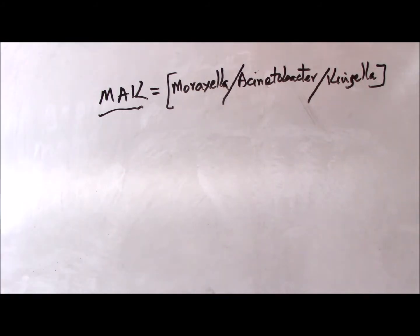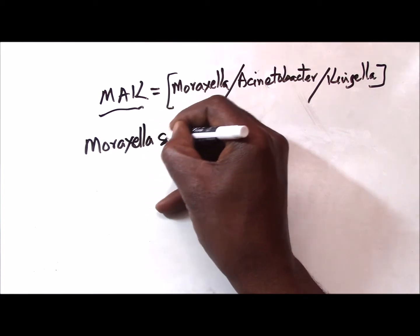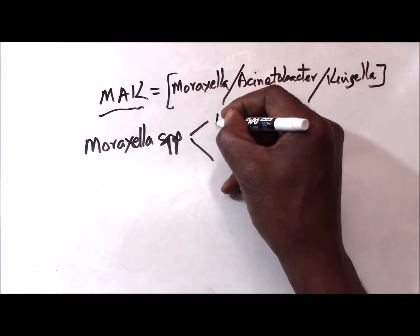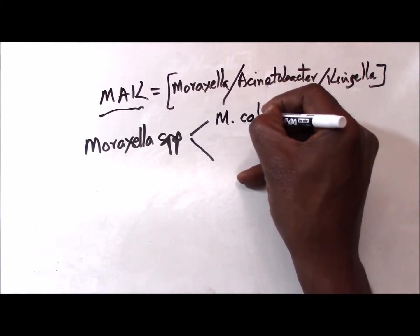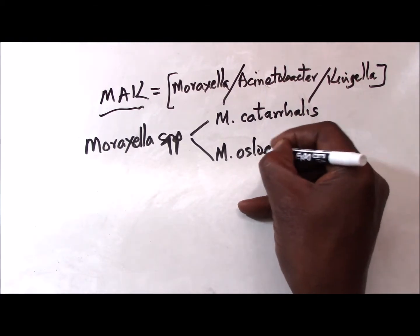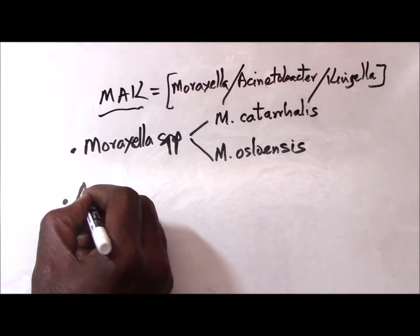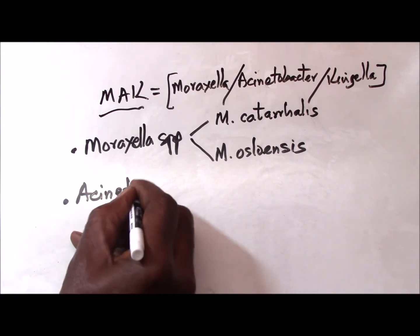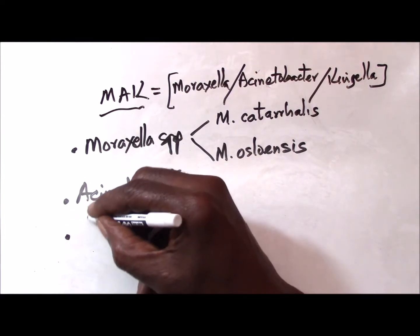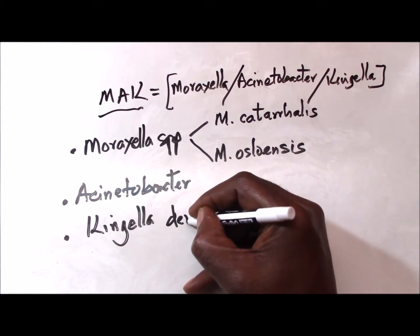We start with Moraxella. In the Moraxella genus there are two important species to keep in mind as possible spoilers: Moraxella catarrhalis and Moraxella osloensis. The next one would be Acinetobacter, and then the last one would be Kingella — in particular, Kingella denitrificans.